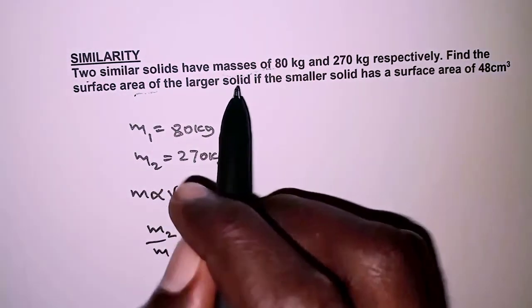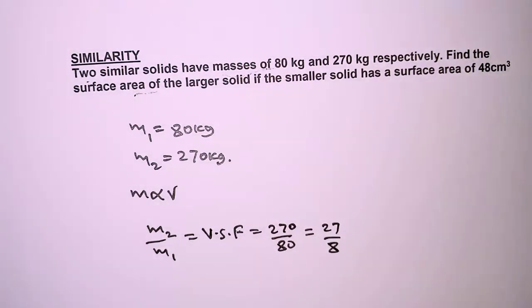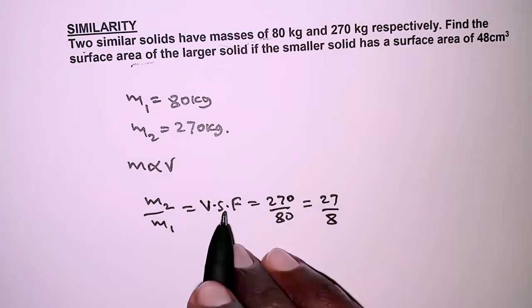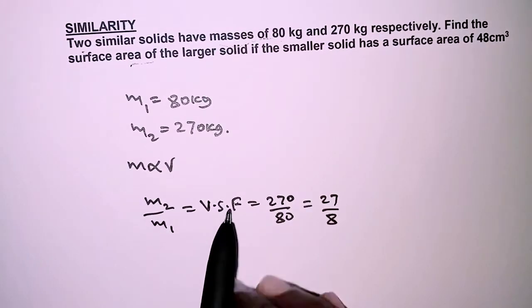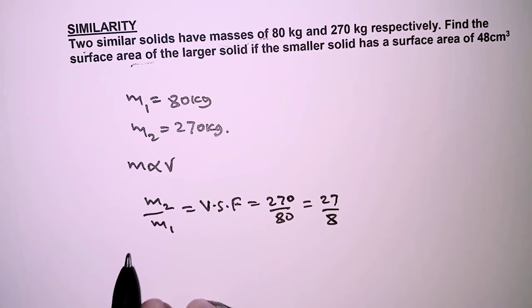From this, remember we are required to get the surface area of the larger solid and we are given the surface area of the smaller solid. So we cannot use the volume scale factor to determine the surface area, which means we need to get the area scale factor.